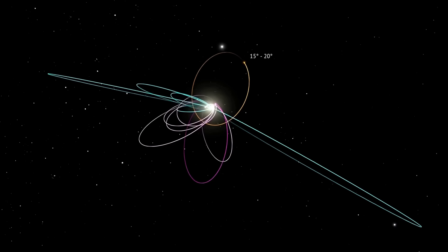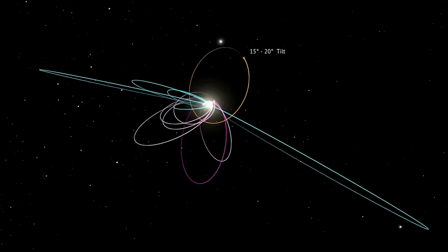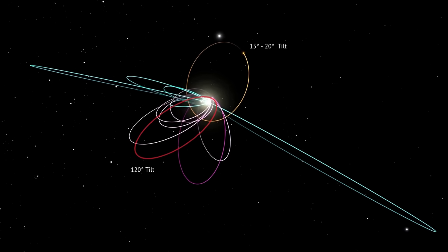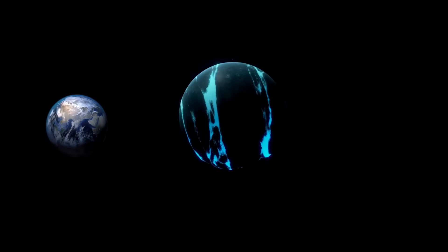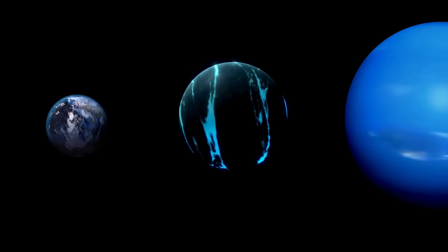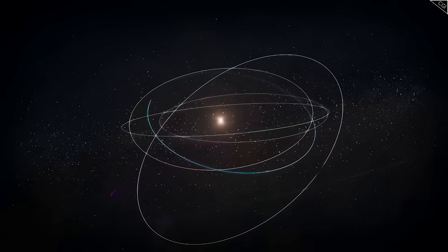Planet Nine, as predicted, should have an orbit tilted about 15 to 20 degrees from the plane of the solar system. This new object's tilt looks more like 120 degrees. That means it's not just tilted, it's orbiting in the opposite direction from most planets. In Brown's words, that doesn't mean it's not there, but it means it's not Planet Nine.